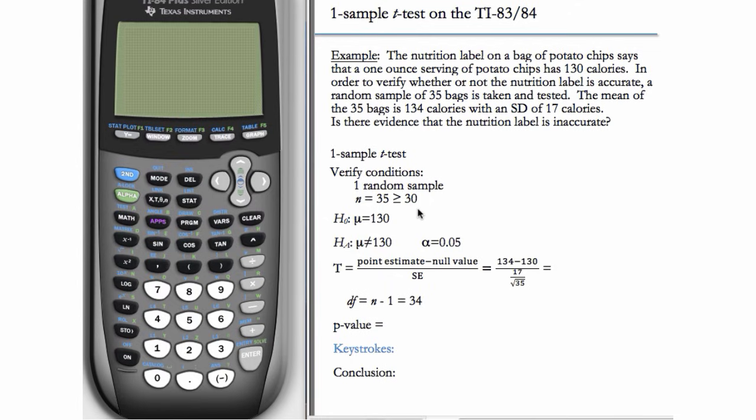So that is satisfied. And now our null hypothesis is that nothing's going on, the label is accurate, everything's fine, mu is what it says at 130. The alternate hypothesis is that mu is not 130.